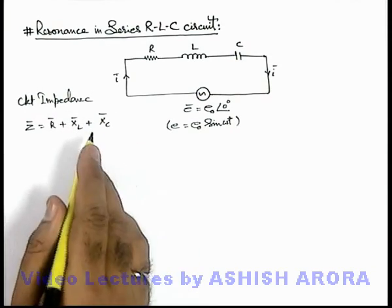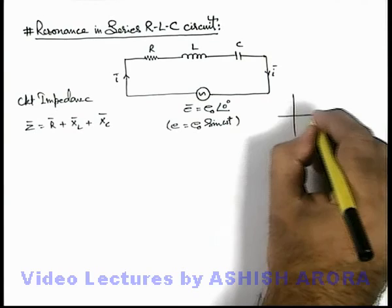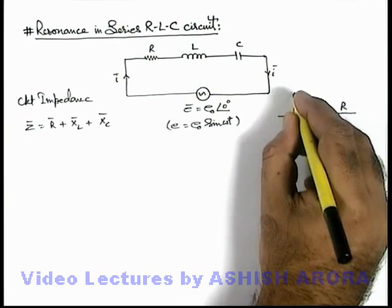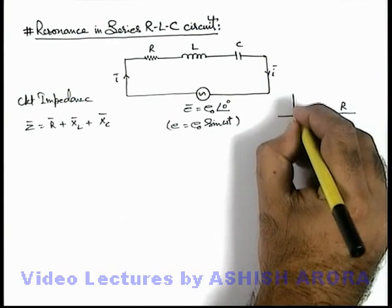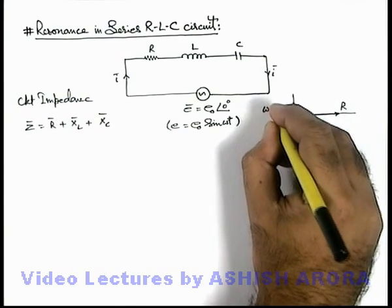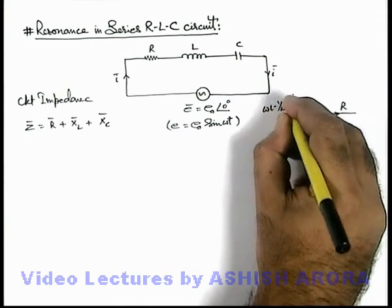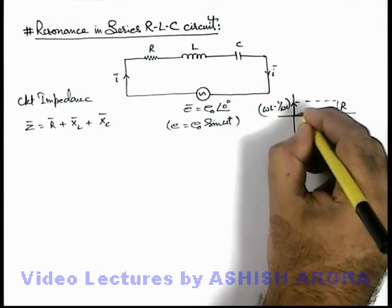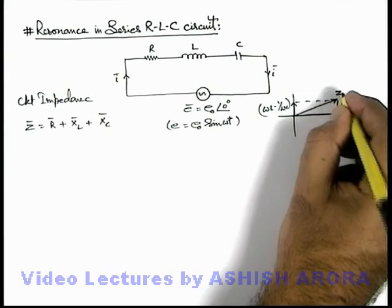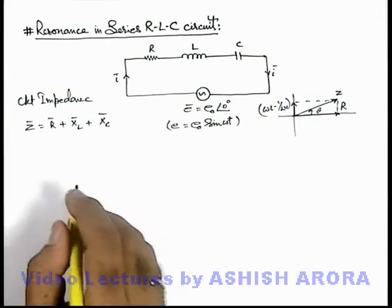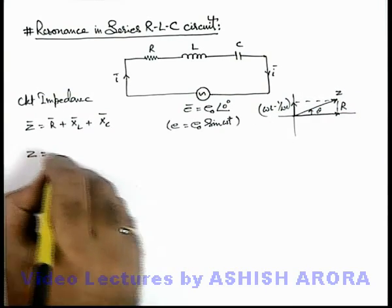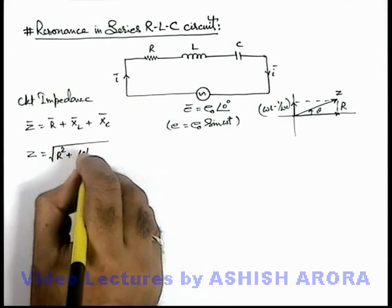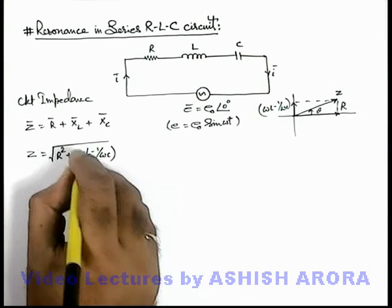As we already studied with the impedance triangle, R will be taken at zero degree. ωL is at +90° and 1/ωC is at -90°, so their difference ωL minus 1/ωC can be taken at zero degree. This gives us the resulting value of impedance Z at an angle theta. The magnitude of Z can be written as √(R² + (ωL − 1/ωC)²).